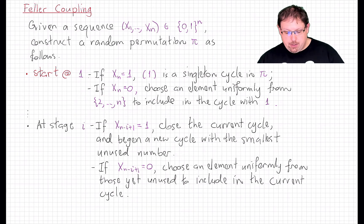If it's 1, then we stop, close off the cycle we've just constructed, and start the next cycle with the next lowest available number. If X_{n-i+1} is 0, then we choose uniformly at random from the remaining unused numbers to include in the current cycle and proceed to stage i plus 1.